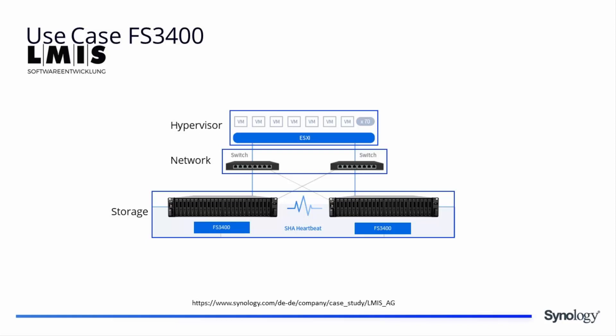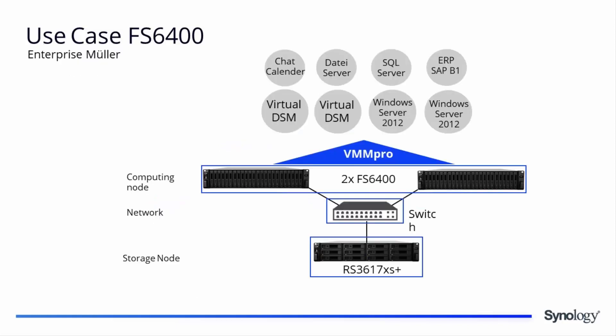The virtualization at the top of their production system can run smoothly and securely thanks to sufficient performance. For the FS6400, here is a deployment at German industrial company Muller, who required a highly productive virtualization environment to support their business processes. The solution is a high availability cluster running Synology's hypervisor VMM Pro, with two FS6400 units operating as a failover pair providing computing power, alongside an RS3617XS+ server acting as a storage node to feed the computing nodes with necessary data.